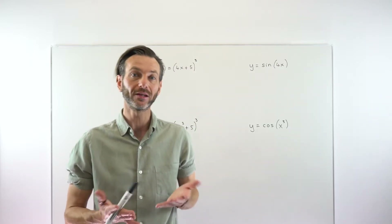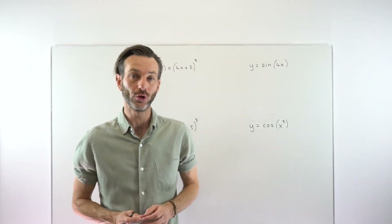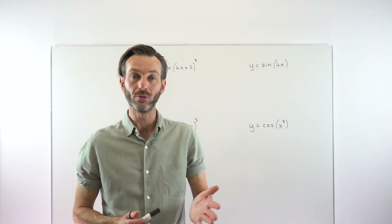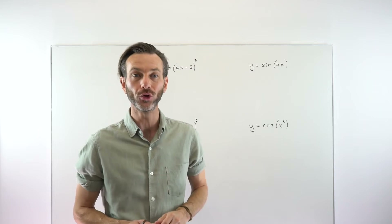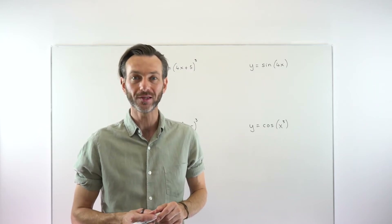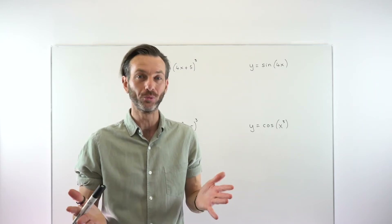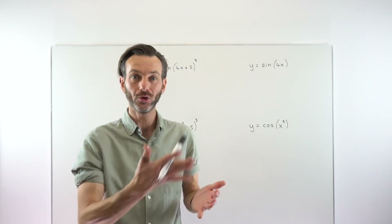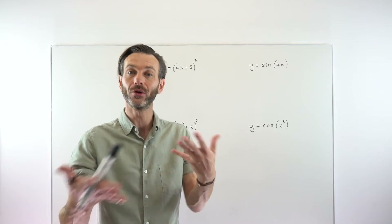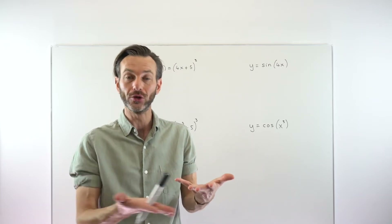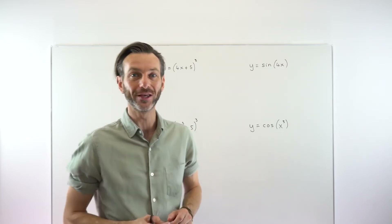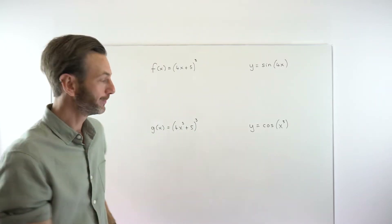The chain rule is technically for differentiating composite functions — that is, a function inside another function — but composite functions manifest in a range of different ways. So learning to recognize what is a composite function, and therefore when you can use the chain rule, is a bit of a challenge and does take some experience.